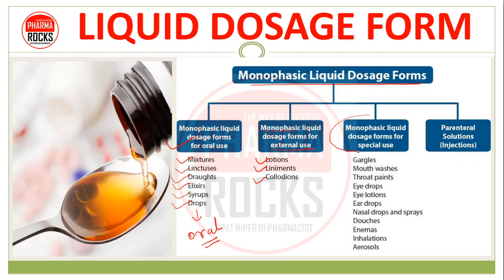उसके बाद monophasic liquid dosage form for special use — जैसे कि gargle, mouth wash specially हम oral cavity के लिए use करते हैं. Same like that throat paint है, ear drops, eye drops, eye lotions वगेरा, specially जो special sense organs के — जैसे कि eye, ear के लिए use करते हैं. Nasal drops है, nasal spray है, douche preparations है, enema है, inhalation, aerosol वगेरा — ये monophasic में ही include होते हैं, but they are for special use.